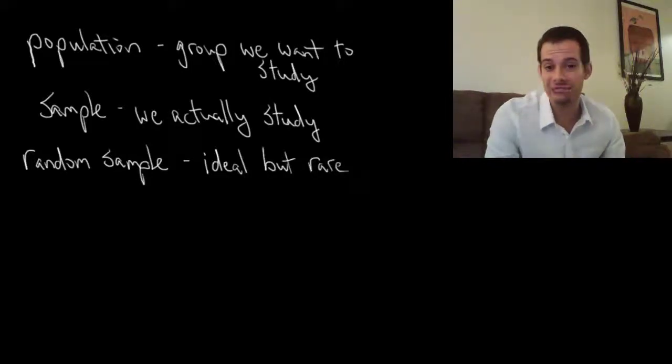The only time you can really have a random sample is if you have a very small population that you want to know about. Then you might be able to randomly select. But most of the time we want to know about big populations, we want to know about all college students, all people in general. So we can't randomly select and have those be our participants.